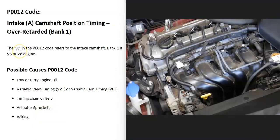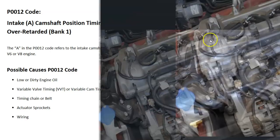Some possible causes of a P0012 code: it could be low or dirty engine oil, it could be the variable valve timing, it could be a timing chain or timing belt, it could be the actuator or sprockets, or it could be in the wiring.